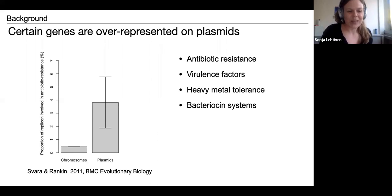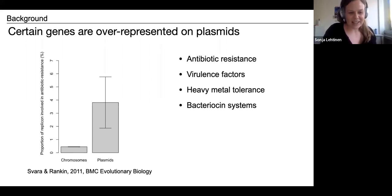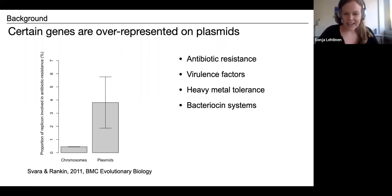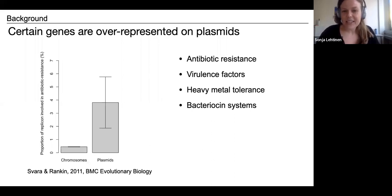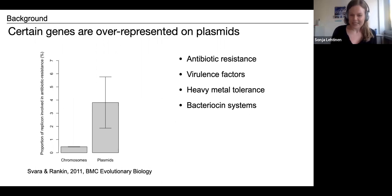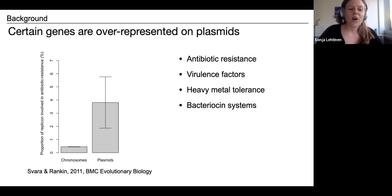Of course there are caveats to this sort of data, notably biases that might exist in the databases used for this type of analysis. Nevertheless, there seems to be a consensus that certain types of genes, including antibiotic resistance, virulence factors, heavy metal tolerance, and bacteriocin systems, are over-represented on plasmids.